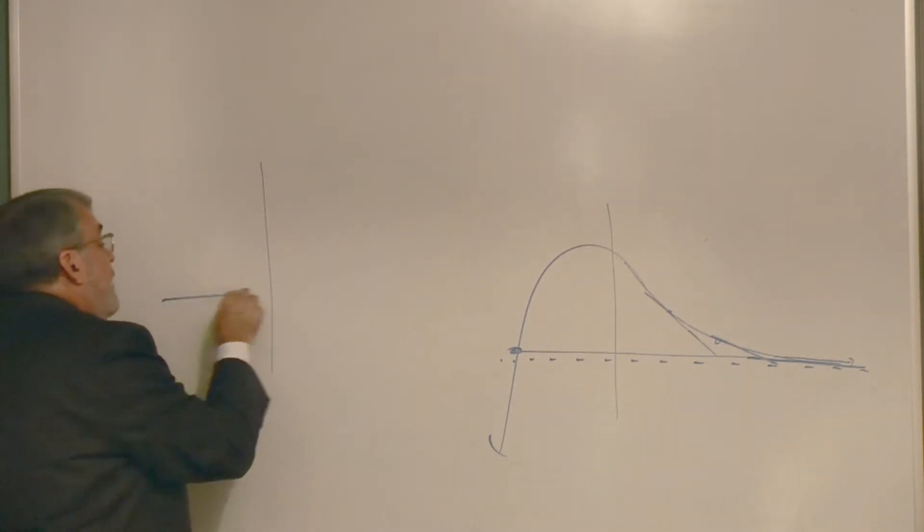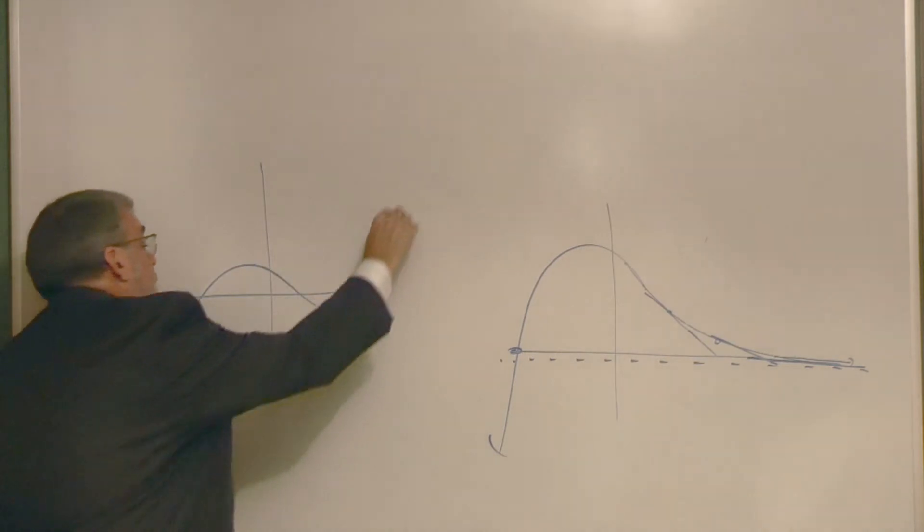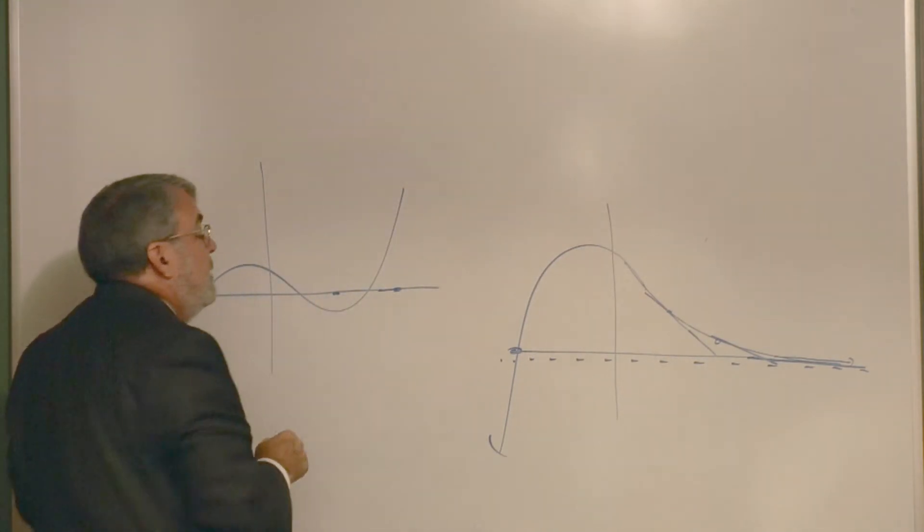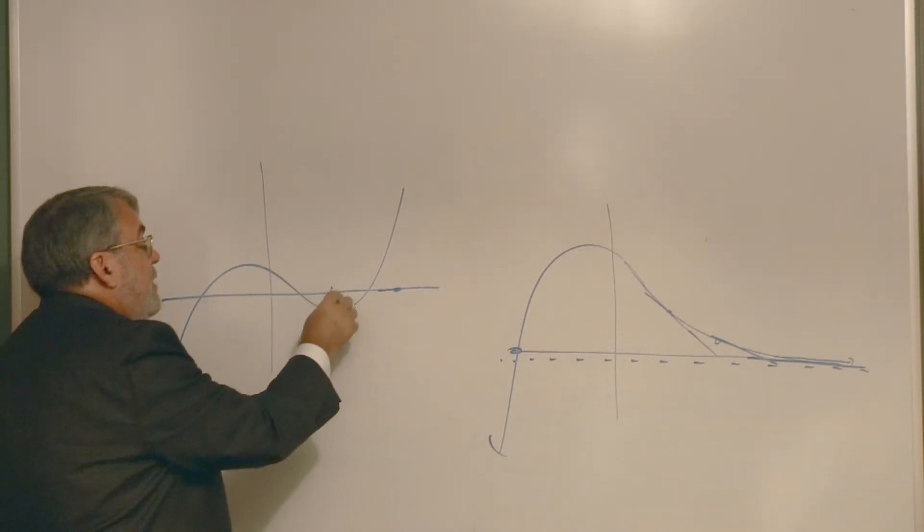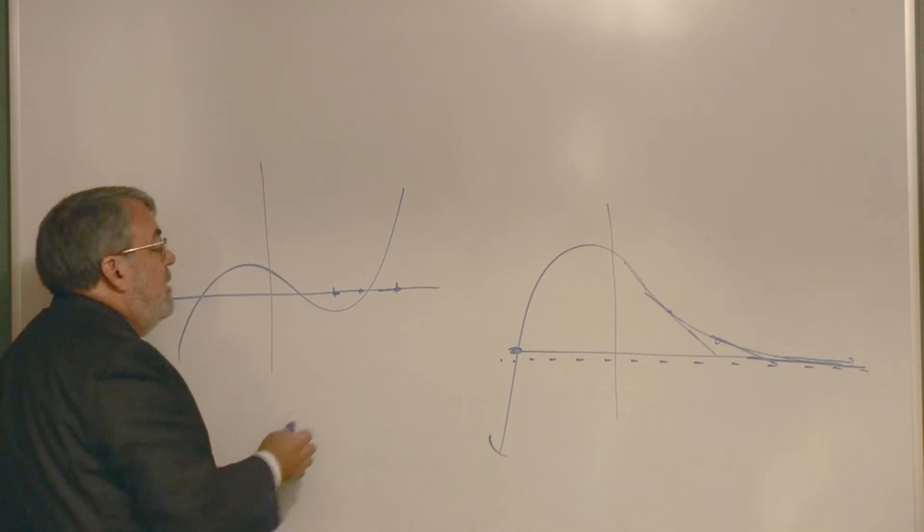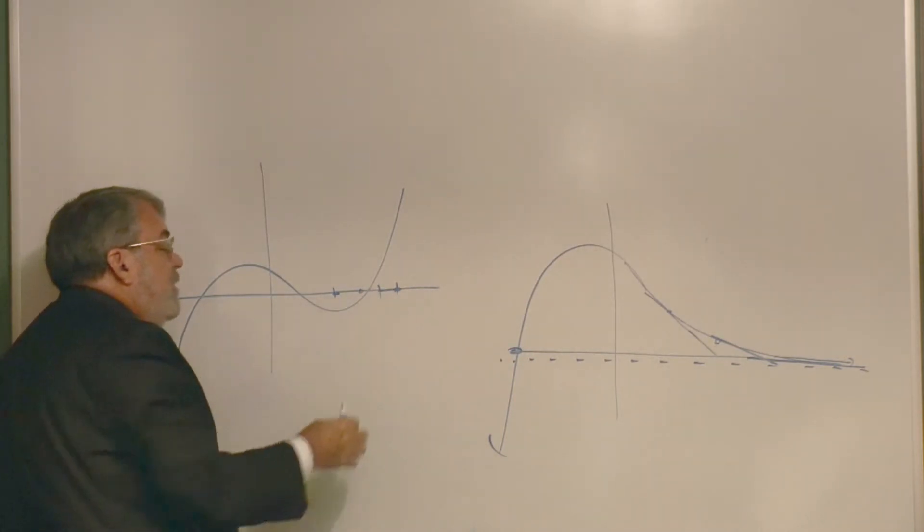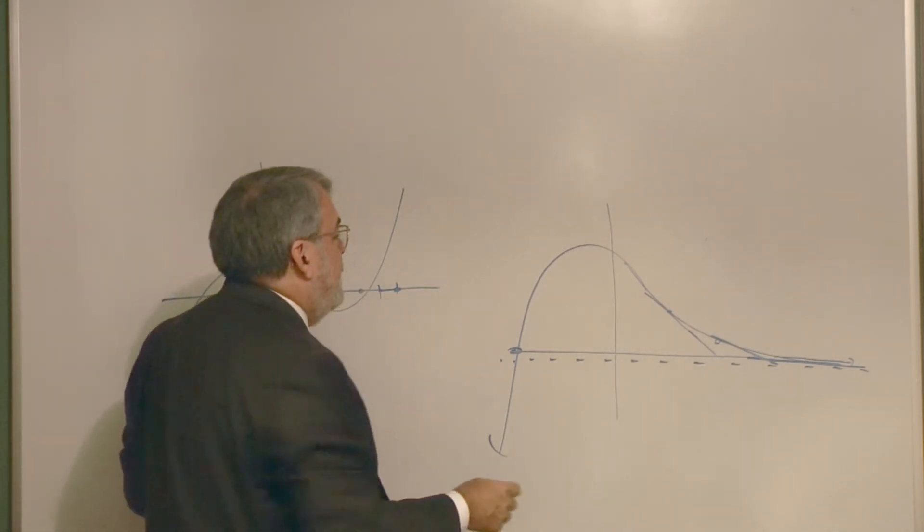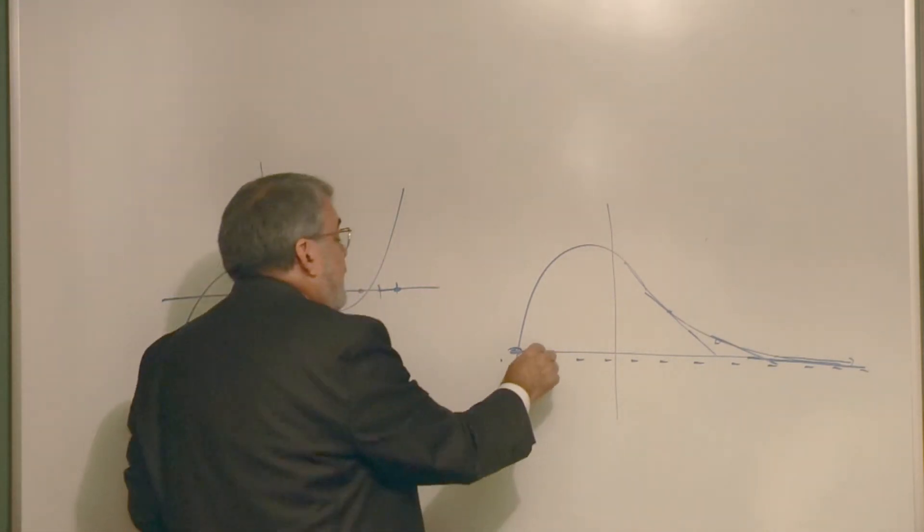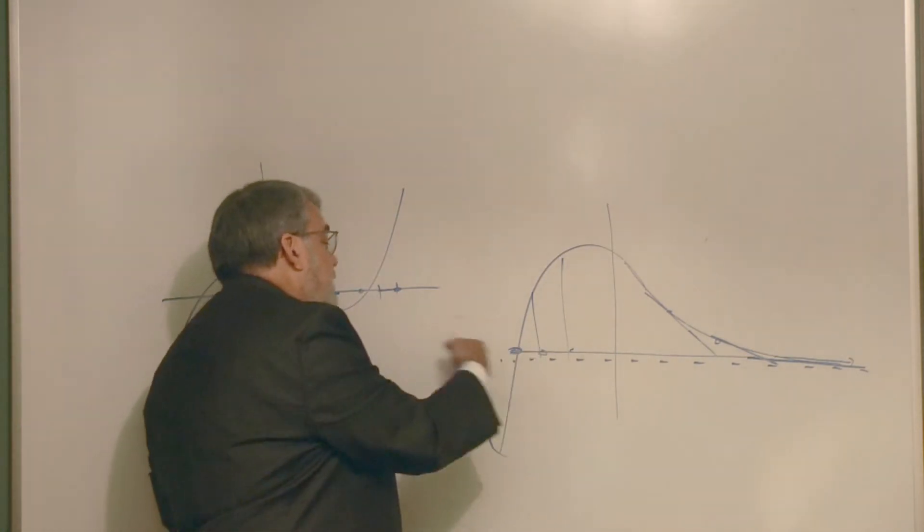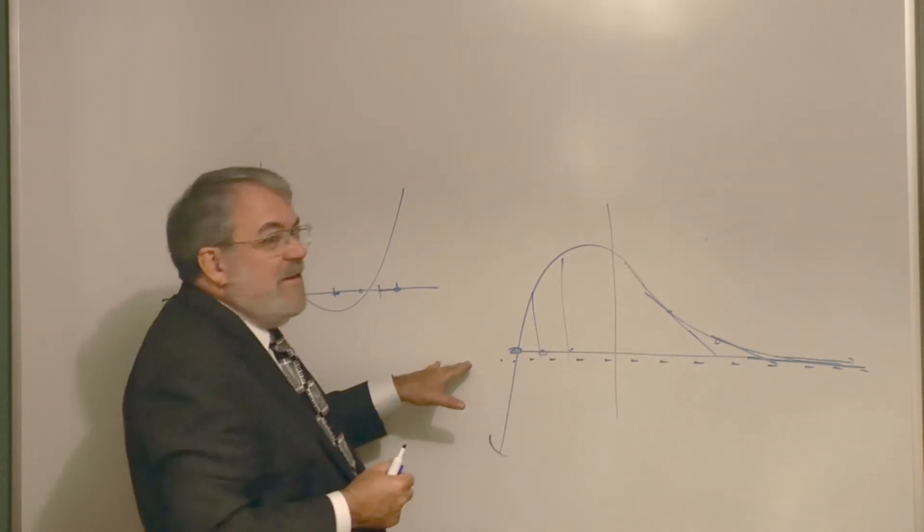And the bisection method involves taking two guesses. And then, for example, if one guess is positive and one is negative, then you take the average. And if that's negative, this is positive, you take that average and you keep doing that. If your two guesses are both positives, you're going to have to go somewhere else to get a negative answer.